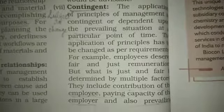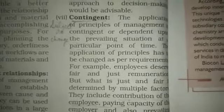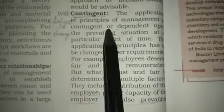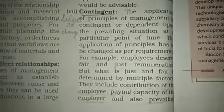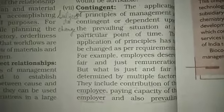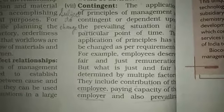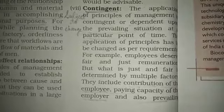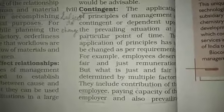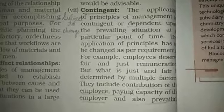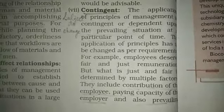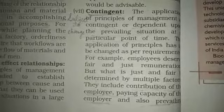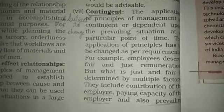The last characteristic of principles of management is that it is contingent in nature. The term contingent means it is subject to change — it will not remain constant all the time, depending upon the prevailing situation. Principles of management are subject to change and need to be modified according to changing demands of the situation. That is why principles of management are called contingent in nature — at a particular point of time, they must be modified and altered depending upon the demand of the situation.